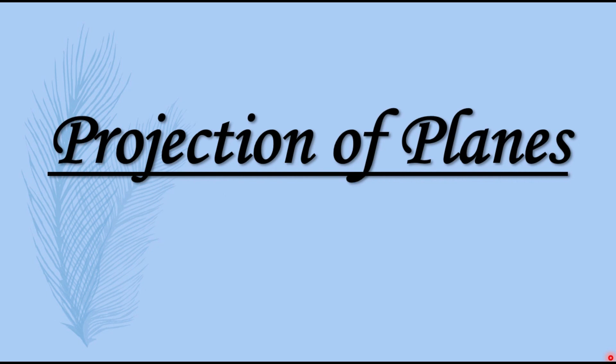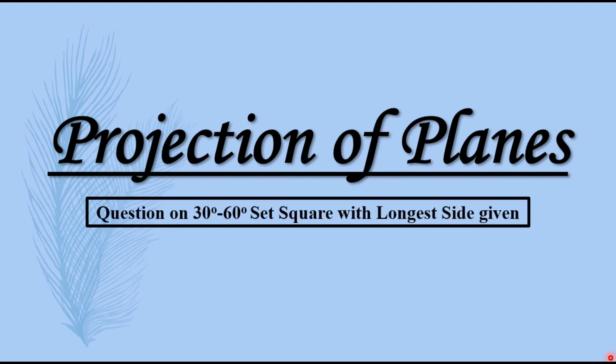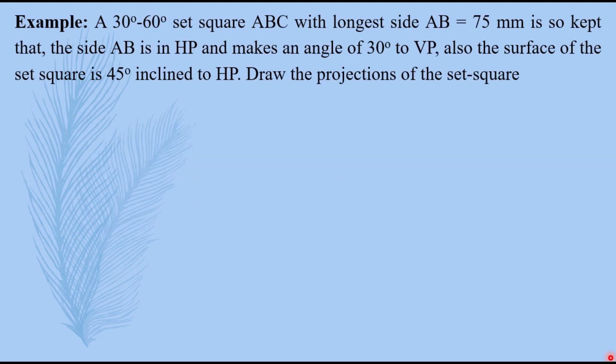In today's video we'll discuss one exam question related to triangular plane which is given as a 30 degree 60 degree set square whose longest side is given to us. So let us take the example directly.